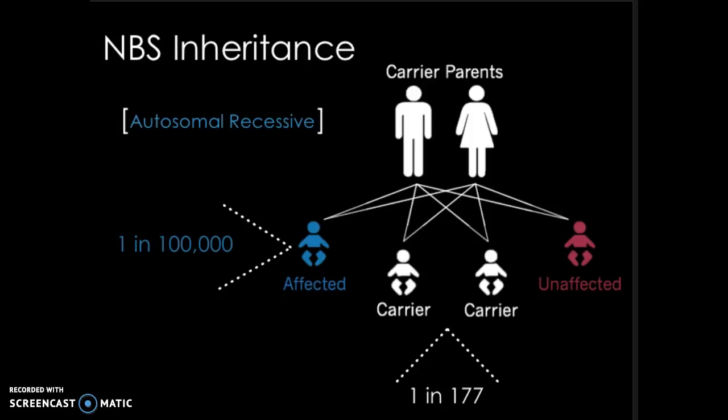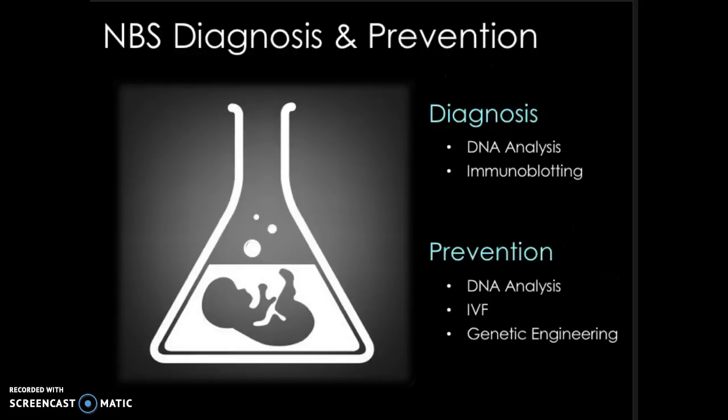NBS is also known to have an increased incidence rate in Eastern European and Slavic populations. NBS can be both diagnosed and prevented using DNA analysis, depending on when it is used. If used before birth on the parents, it can detect carriers and be paired with IVF and genetic engineering to select embryos free of the mutation. If used after birth, the child's DNA is analyzed for mutations in the NBN gene. Immunoblotting can be used in harder-to-diagnose cases.